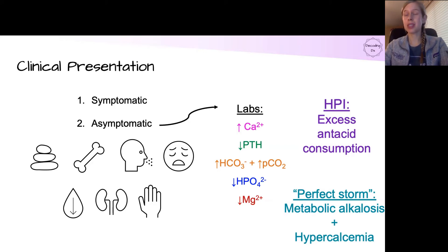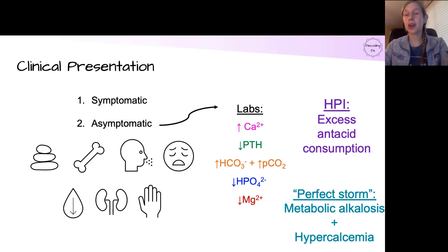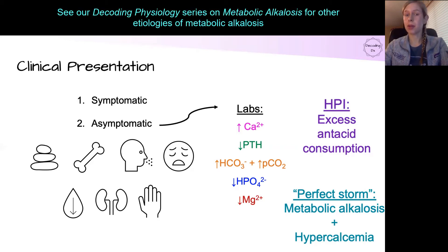An example of this would be a cancer patient who has hypercalcemia from cancer metastases to the bones, and they also have nausea and vomiting from their chemo. They would have a metabolic alkalosis from the nausea and vomiting and hypercalcemia from the cancer.